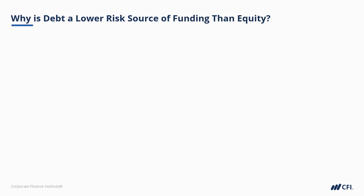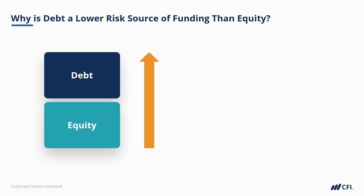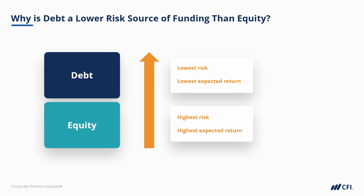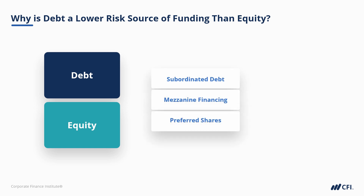With the understanding that debt and equity are the only two external sources of funding available to a company, let's touch on why debt is considered a lower-risk and therefore cheaper source of capital than equity. The best way to visualize this is through a corporate finance concept: the capital stack, where you can visualize different funding sources being stacked on top of each other. The higher a funding source is on the capital stack, the more senior it is, and therefore the lower risk it is from the perspective of that capital provider. The lower it is in the capital stack, the higher risk it is. While there are a variety of unique, hybrid, and sometimes exotic funding sources, like subordinated debt, mezzanine financing, and preferred shares, they all basically fall into the two main categories we already covered: equity and debt.